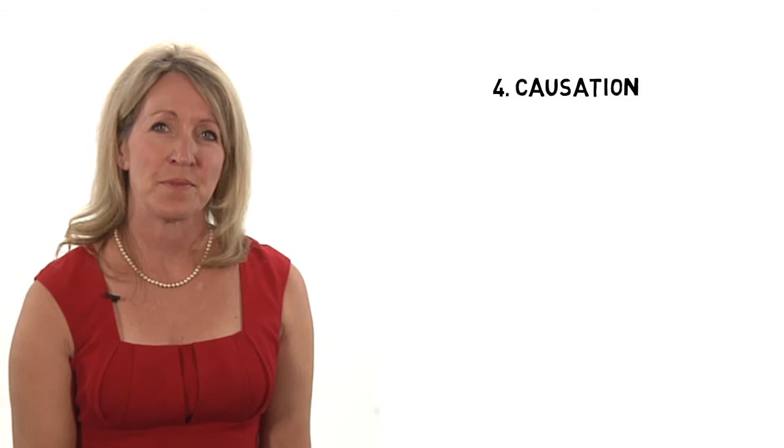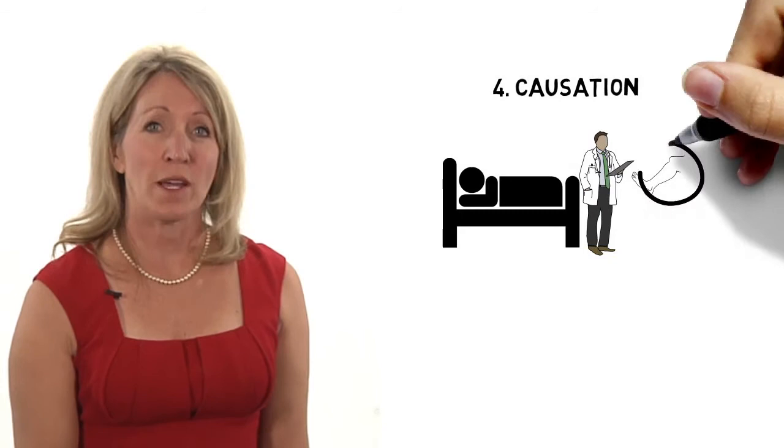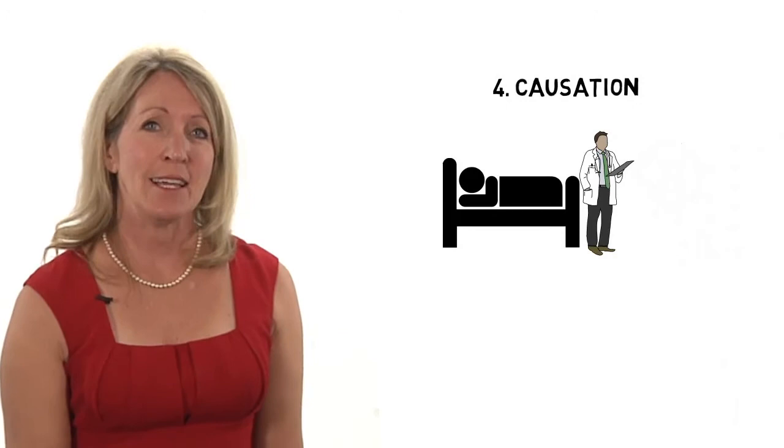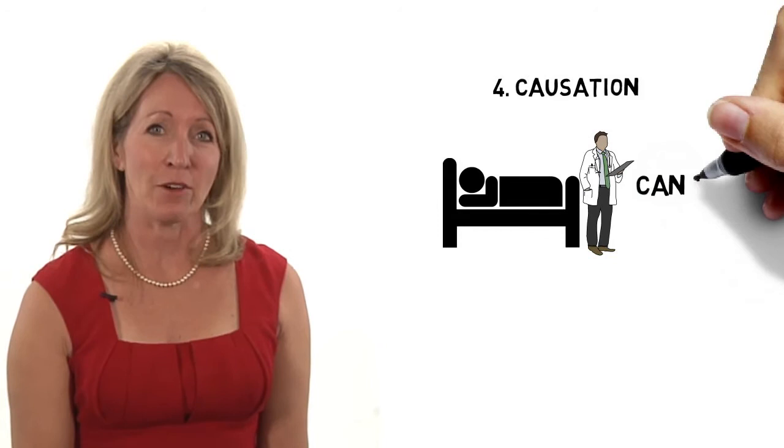In some cases, causation is easy to prove, such as when the doctor cuts off the wrong leg during surgery. There is no question that the injury, the loss of the leg, is due to the breach in the standard of care, the failure to confirm which leg was to be operated on. But in many cases, causation is difficult to prove because many, many factors can affect health outcomes.